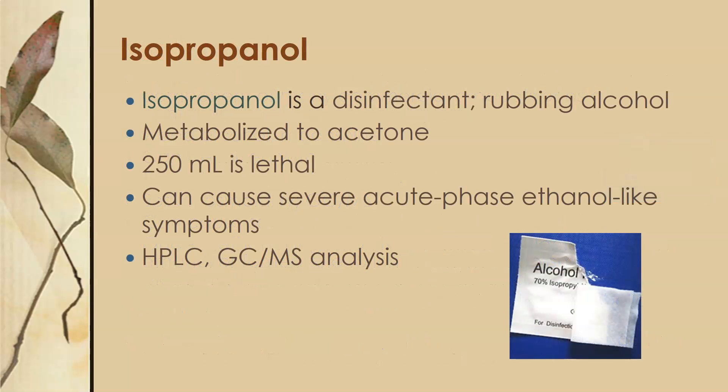The next alcohol is isopropanol — it is a disinfectant, found in alcohol wipes, and can be picked up at any drugstore. It is also called rubbing alcohol. The body metabolizes it to acetone. 250 milliliters is lethal. It can cause severe acute ethanol-like symptoms and can be detected by high-performance liquid chromatography or gas chromatography-mass spectrometry analysis.